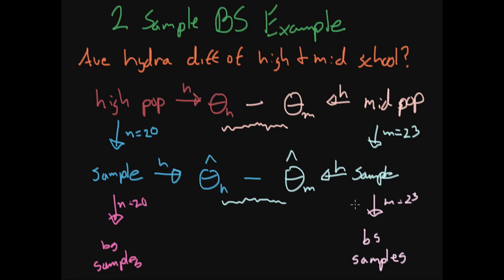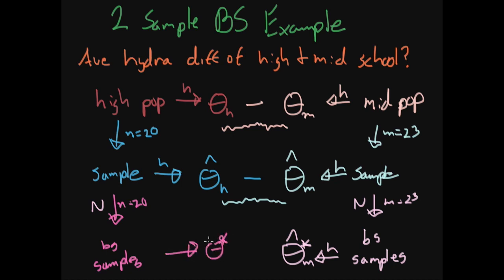We have the same number of bootstrap samples from each group. For each bootstrap sample, we apply hydration — getting theta-hat-star sub M, the bootstrap estimate of middle school hydration, and theta-hat-star sub H, the bootstrap estimate of high school hydration. We take the difference, and we do this lots and lots of times. This gives us the sampling distribution we're interested in, and from it we can compute the confidence interval.